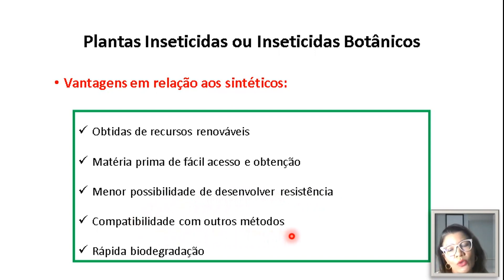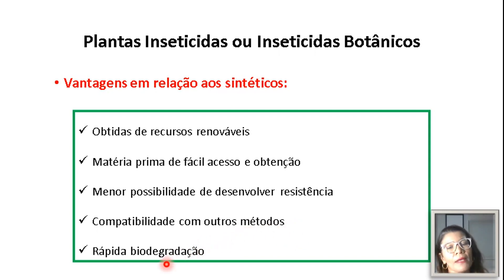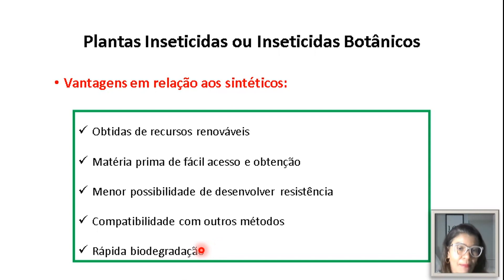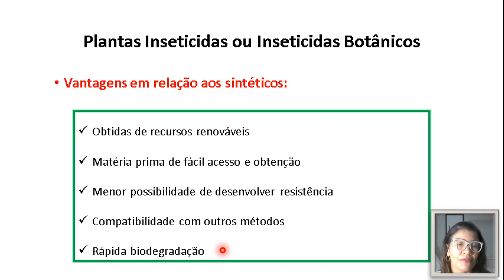A compatibilidade inclui a resistência de plantas, o controle biológico e até mesmo os inseticidas químicos. Além disso, esses produtos são rapidamente biodegradados no meio ambiente, ou seja, não vão se acumular. Mas essa vantagem também é vista como uma desvantagem quando a gente pensa nas reaplicações, porque quando um produto é rapidamente biodegradado, isso significa que terei que reaplicar mais vezes — o que demanda maior consumo de matéria-prima. Então, do ponto de vista da reaplicação, essa rápida biodegradação é vista como uma limitação.